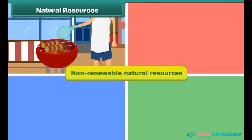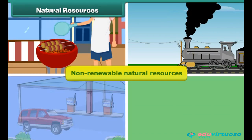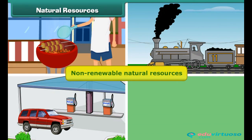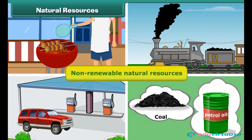Non-renewable natural resources are those resources that are limited in supply. They take years to form and get exhausted by continuous human use. For example, coal, petroleum, etc. are non-renewable natural resources.